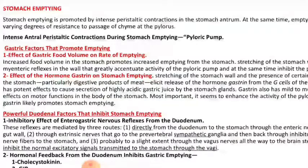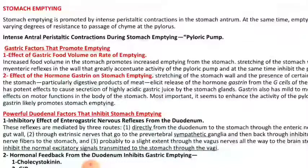We also have hormonal inhibition from the duodenum. For example, cholecystokinin and gastric inhibitory polypeptides are secreted from the duodenum. These hormones provide feedback inhibition to the stomach, further inhibiting gastric emptying and reducing the pyloric pump activity.